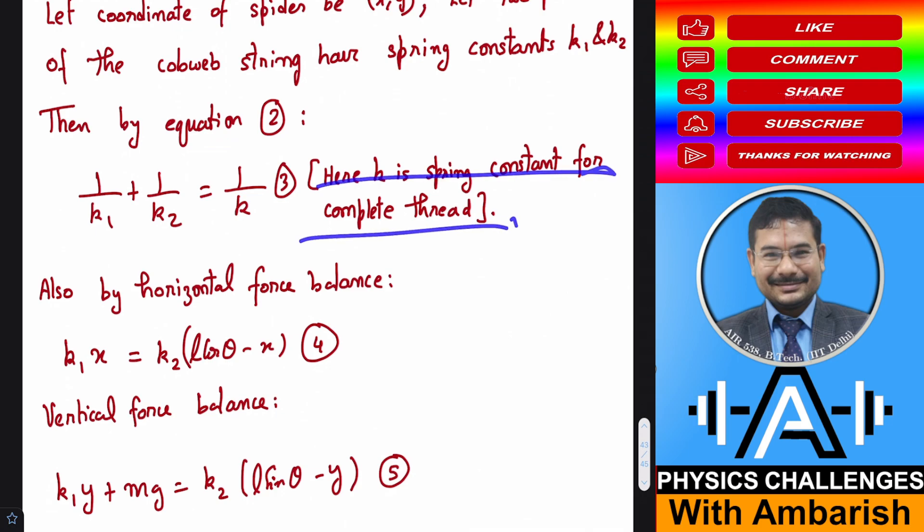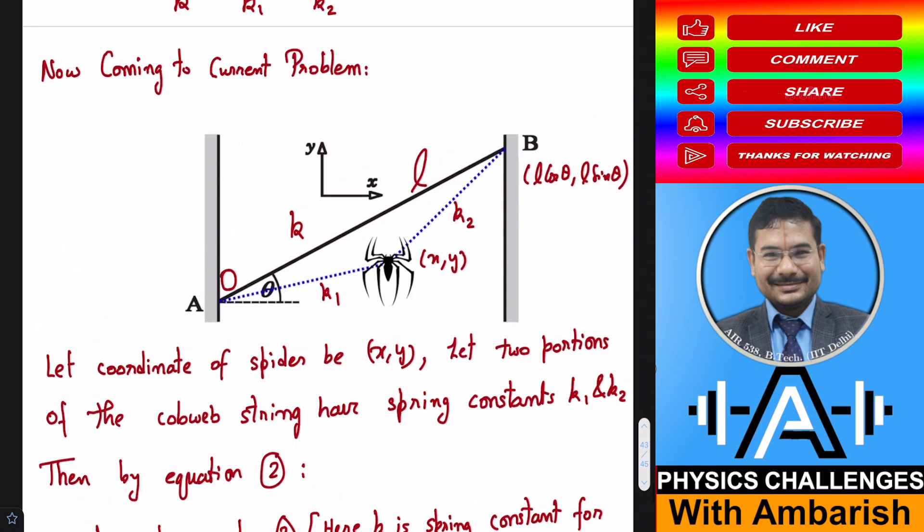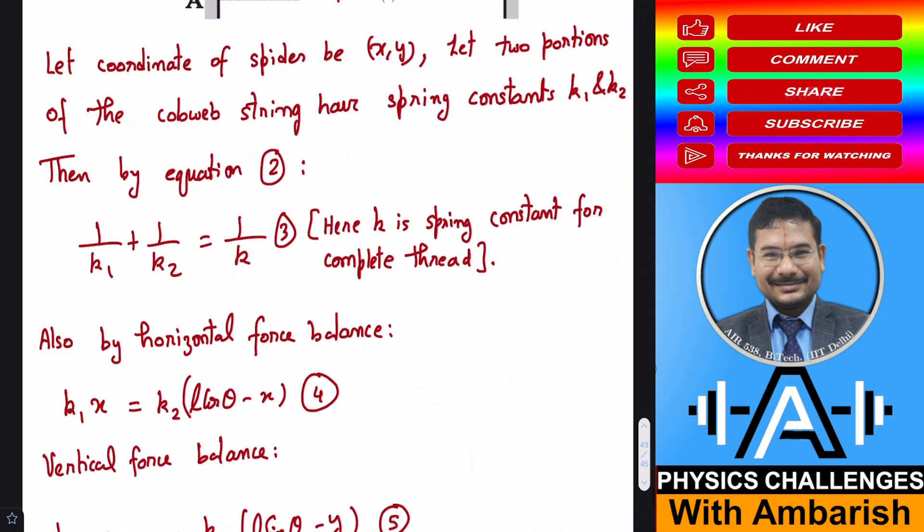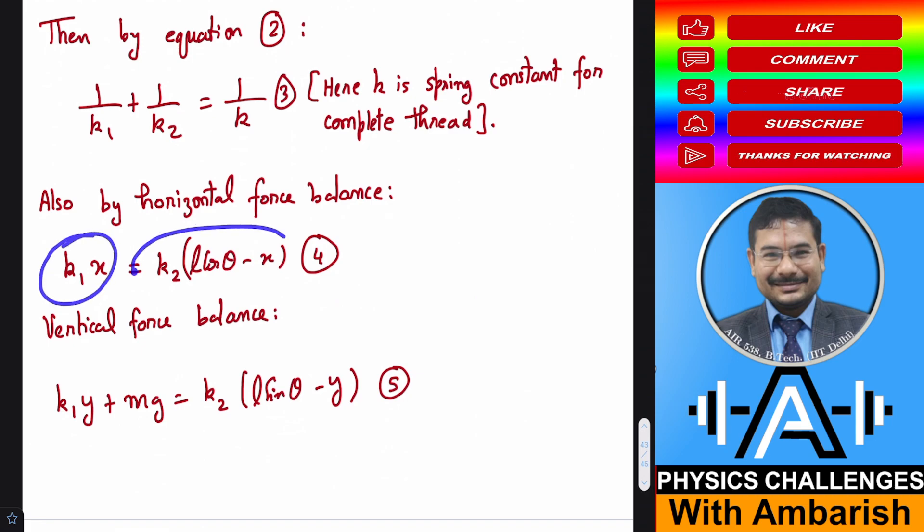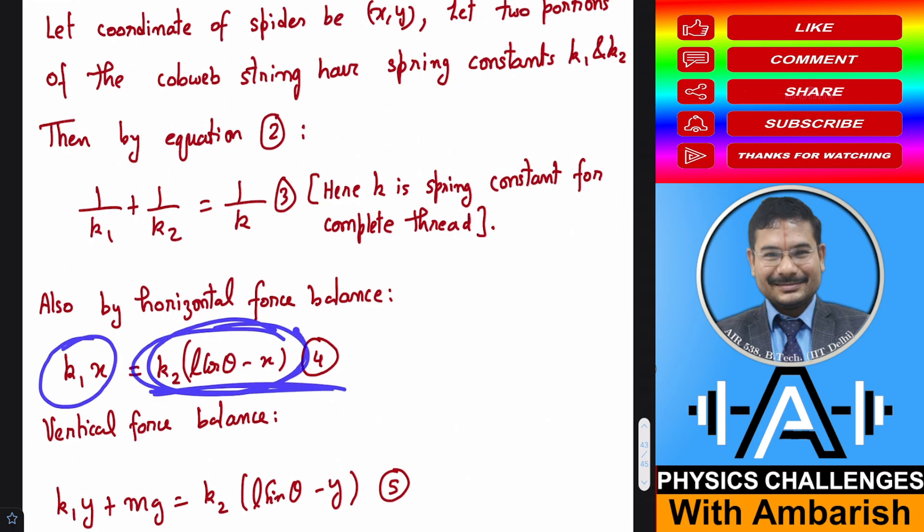Now we can do the horizontal force balance. What is the stretching in the x direction? X is the stretching in the x direction for this one. For this one, how much is the stretching? The coordinate of B is L cos theta and this is x, so stretching in K2 is L cos theta minus x. So K1 times x equals K2 times L cos theta minus x. I hope you understood. This is the horizontal stretching in the second spring, L cos theta minus x.